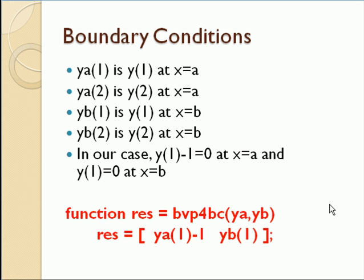Then for boundary conditions, this routine lets ya be a vector of solutions at our first point, x equals a, which in our case is zero. And yb be a vector of solutions at our second edge, which is the right edge, which is x equals b, or in our case x equals pi over two.